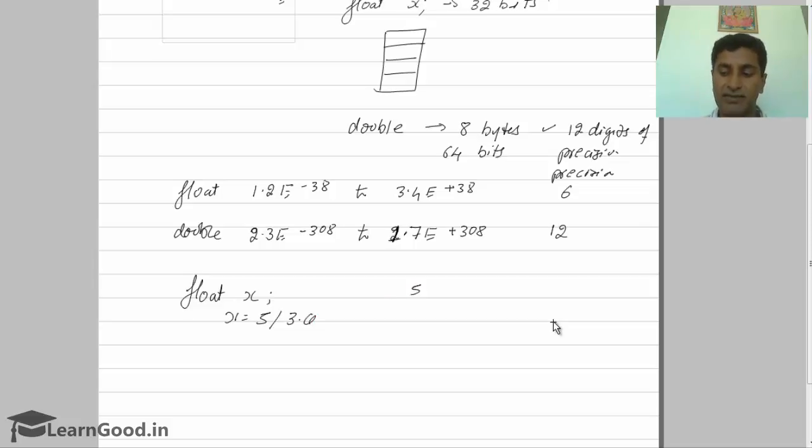Five divided by three: three ones are three, two is the remainder, six are eighteen, two is the remainder again—this continues endlessly. In this case, float will have a value of 1.666666, six decimal digits. You can store a maximum of six decimal digits.